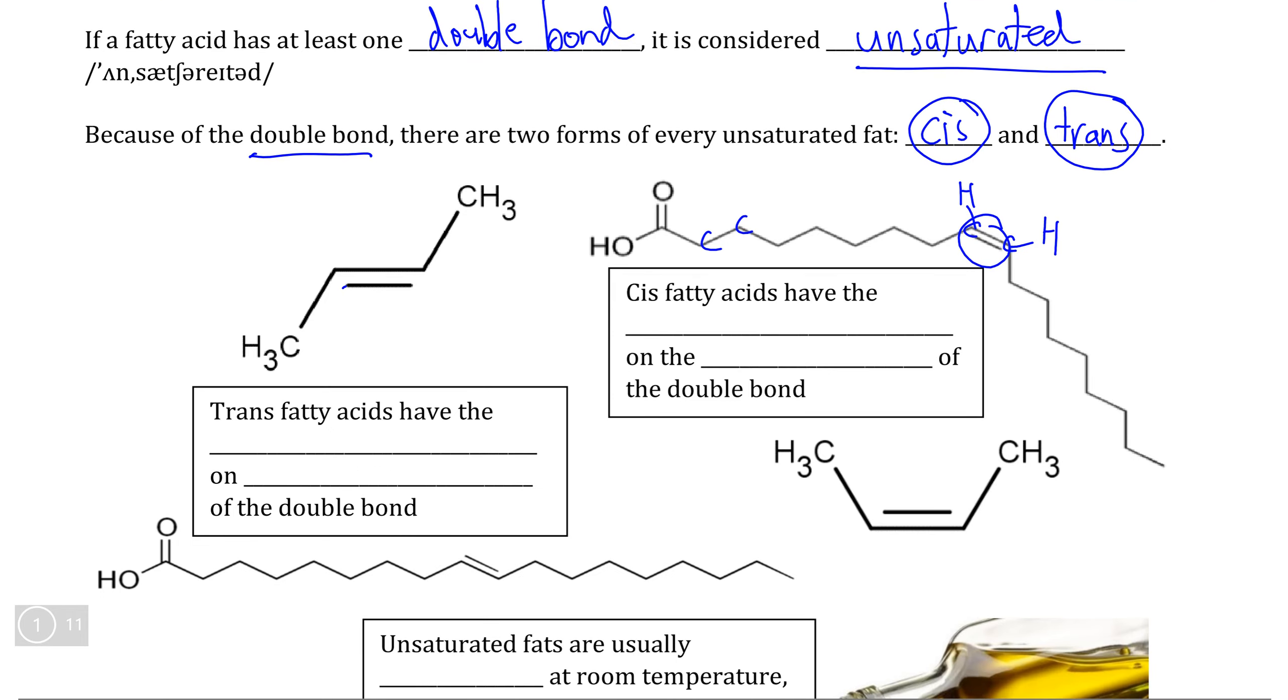The fatty acid that we've listed in the top right corner here is actually the cis form of the fatty acid. And there's an easy way that we can determine this. First, what we need to do is look at the double bond horizontally.